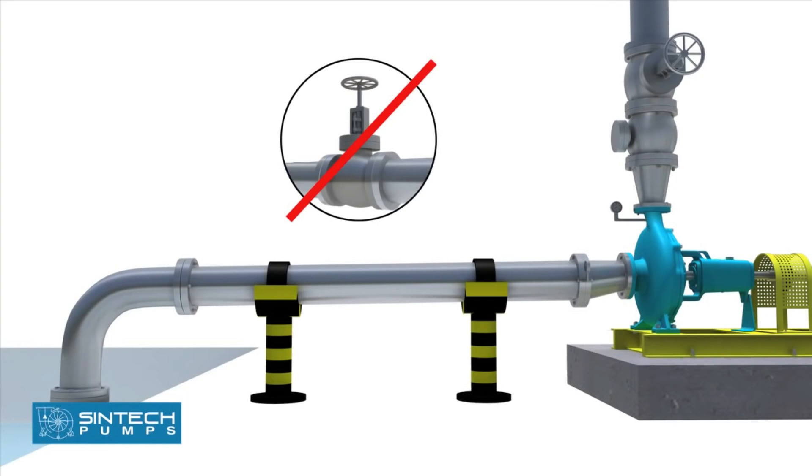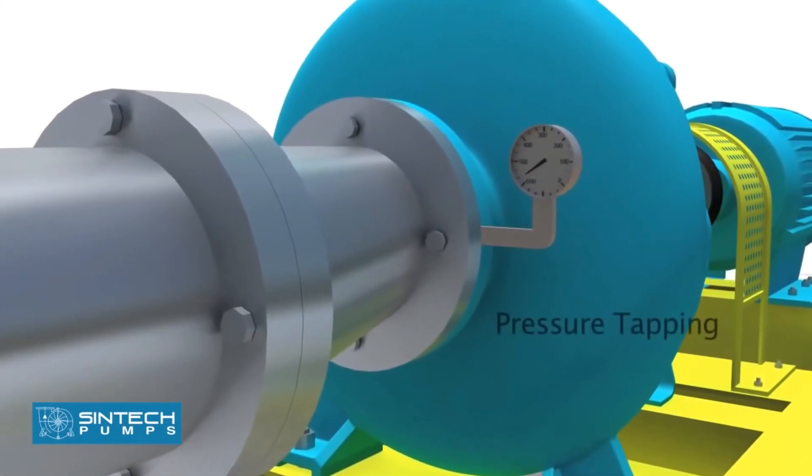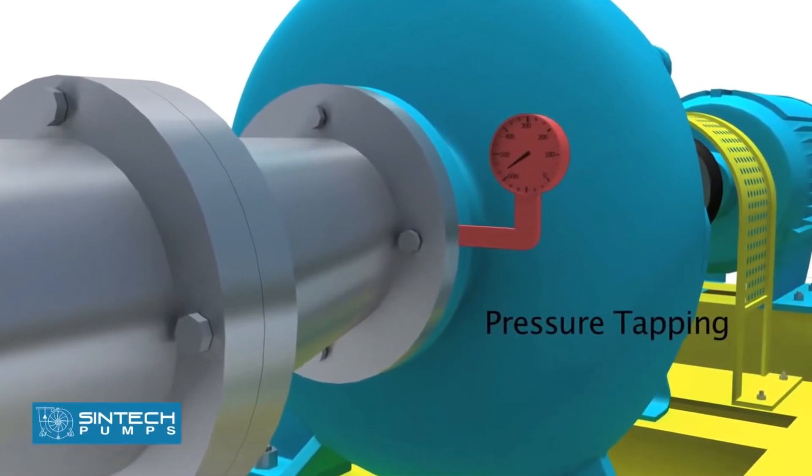No isolation valve is recommended. There should be a tapping provided for installing a vacuum gauge in the suction line.